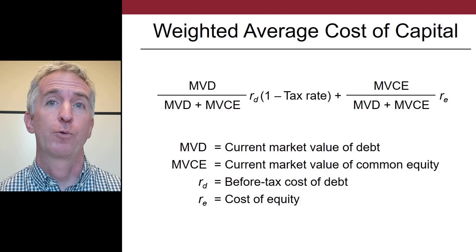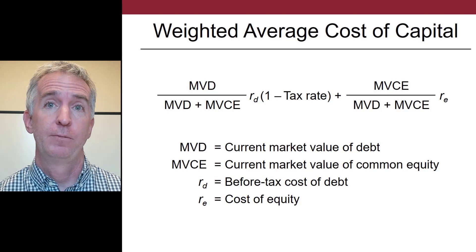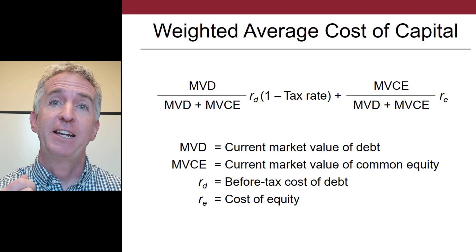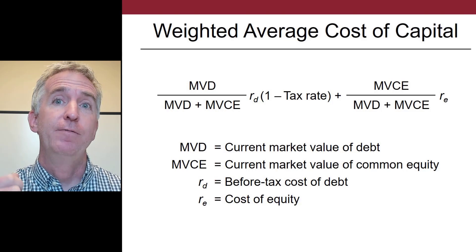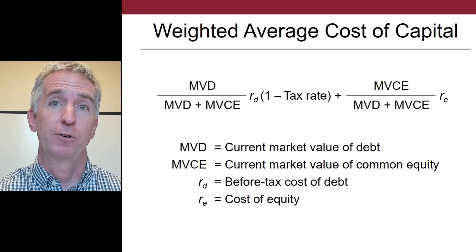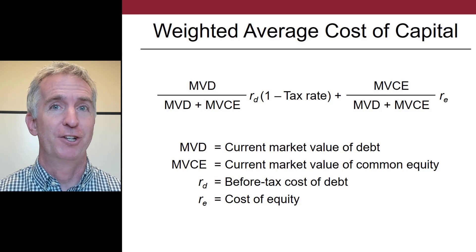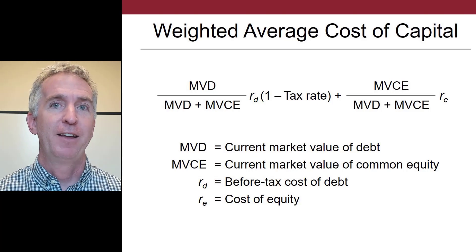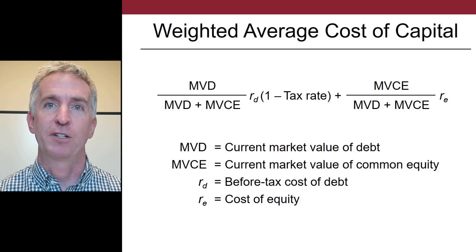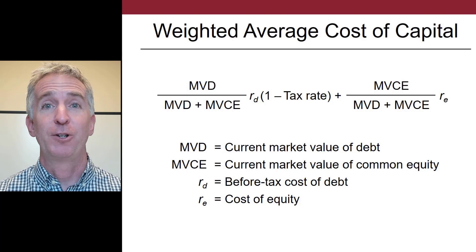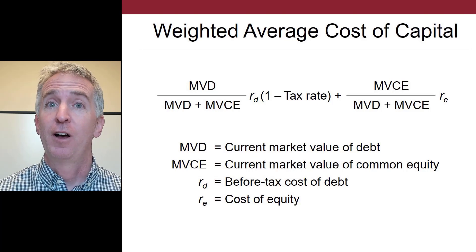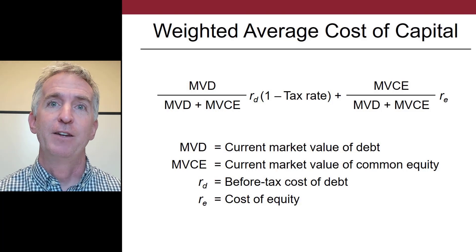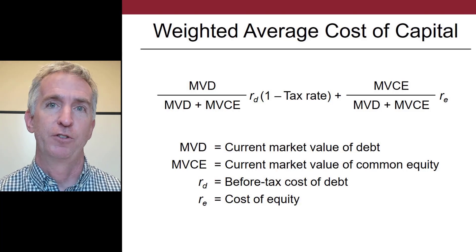How do corporations create value? They raise money from a variety of sources and then they take that capital and invest it to earn a higher return. The question is, higher than what? You can answer that by calculating the weighted average cost of capital, which basically looks at the cost of the various sources of capital and weights them by their percentage use of the corporation.